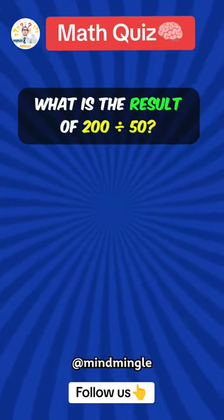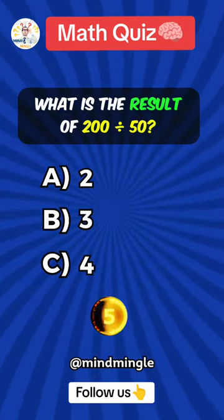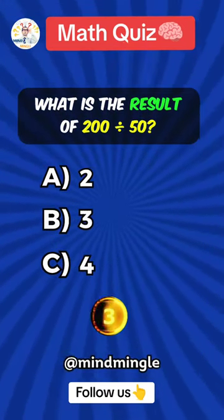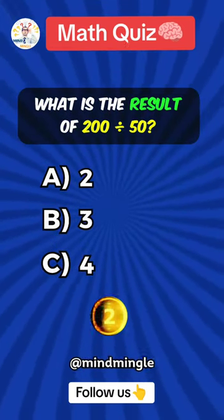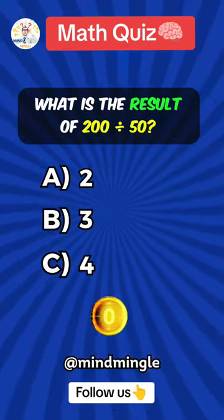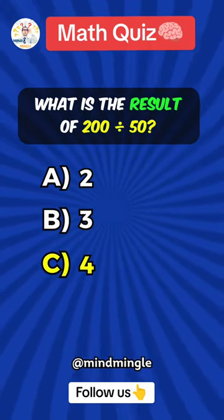What is the result of 200 divided by 50? Answer C: 4.